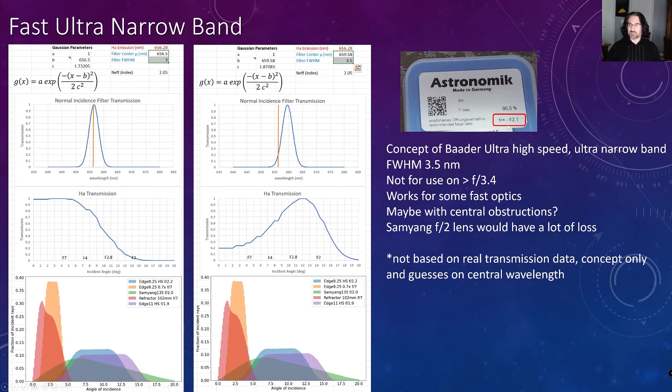When I look back at my Astronomik filters, they are specified as being from F infinity down to F2.1. That has to do with their selection of how it has been pre-shifted and for a certain bandwidth. However, there's some new filters out on the market made by Baader that are described as their ultra high speed, ultra narrow band filters that have bandwidths on the order of like 3.5 nanometers. And they suggest not to use these on scopes that have a focal ratio greater than about F3.4. So what does that mean?